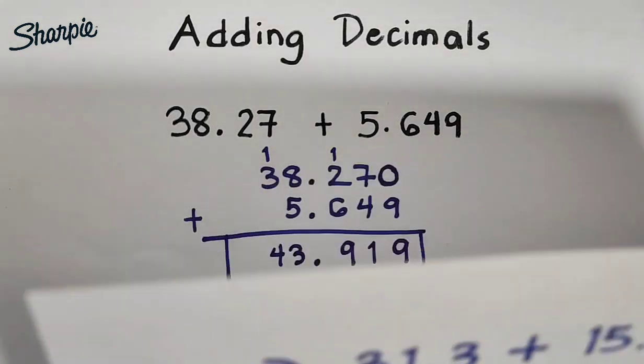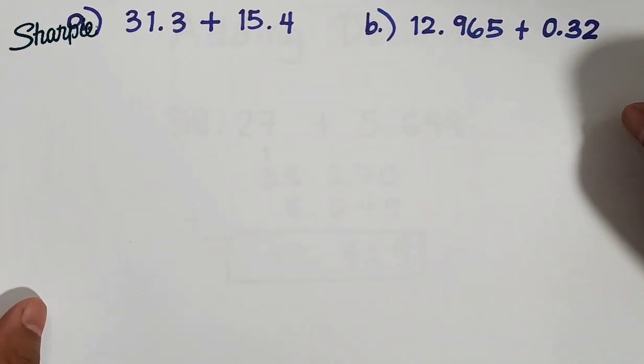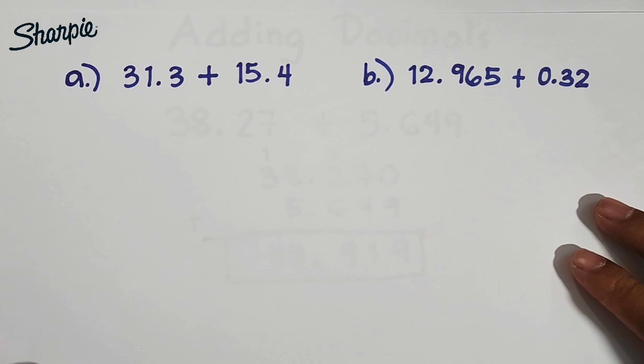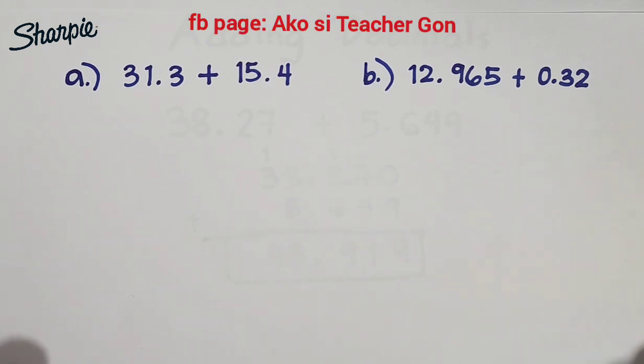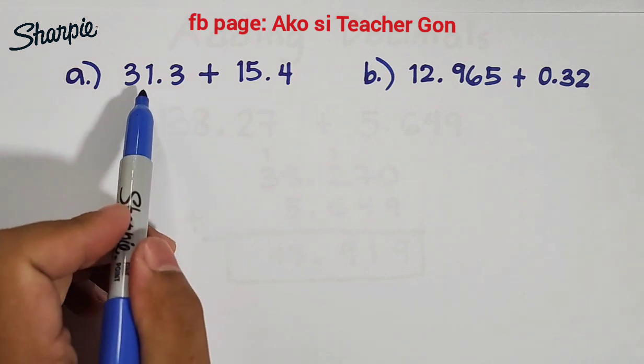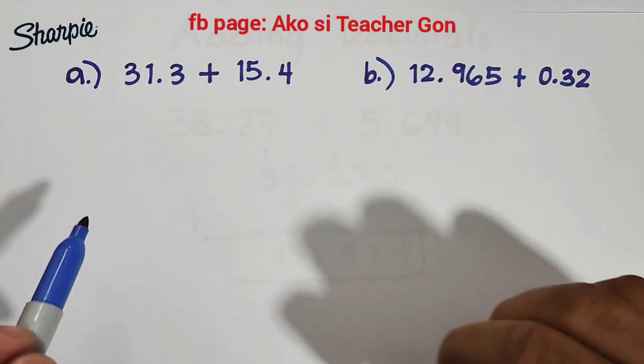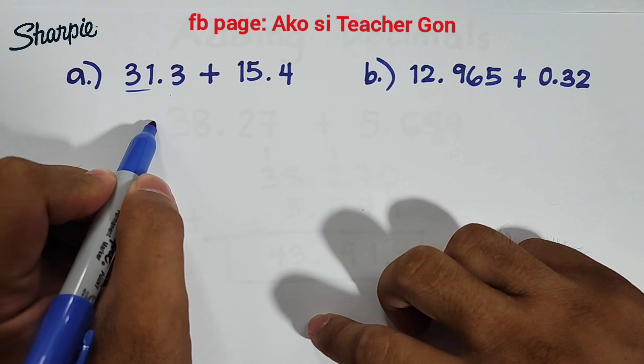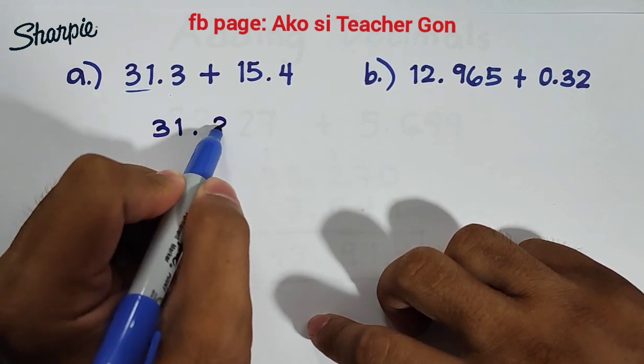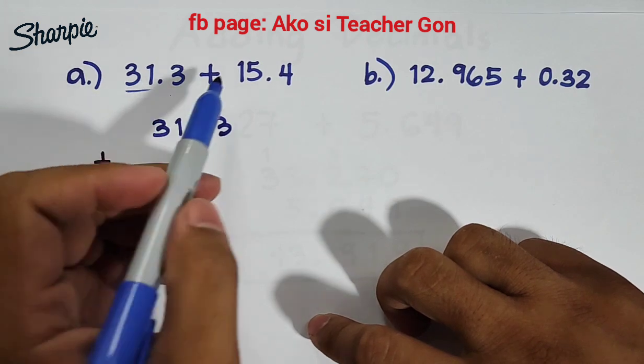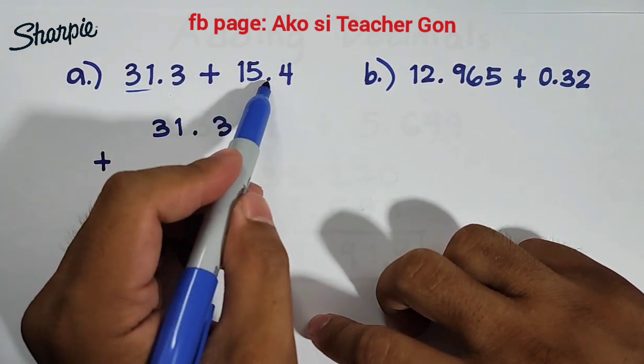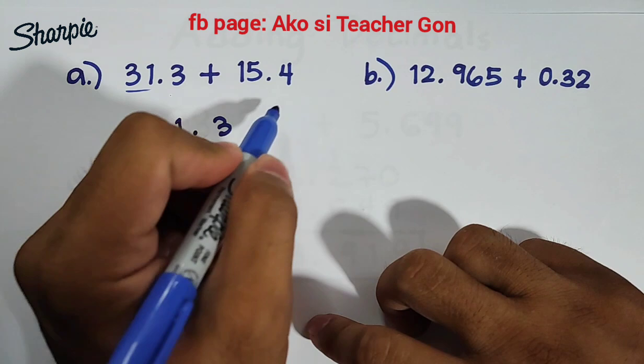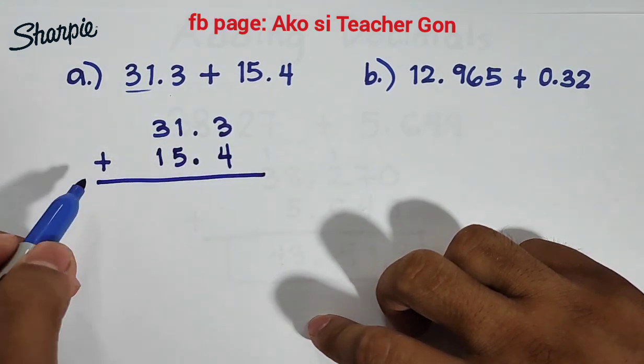So for us to master how to add decimals, we will try to answer two more examples on how to add decimals. So we have here in letter A we have 31.3 plus 15.4. For letter A add them, you will align their decimal point, put the decimal point here, copy 15 then your 4, and then add them.